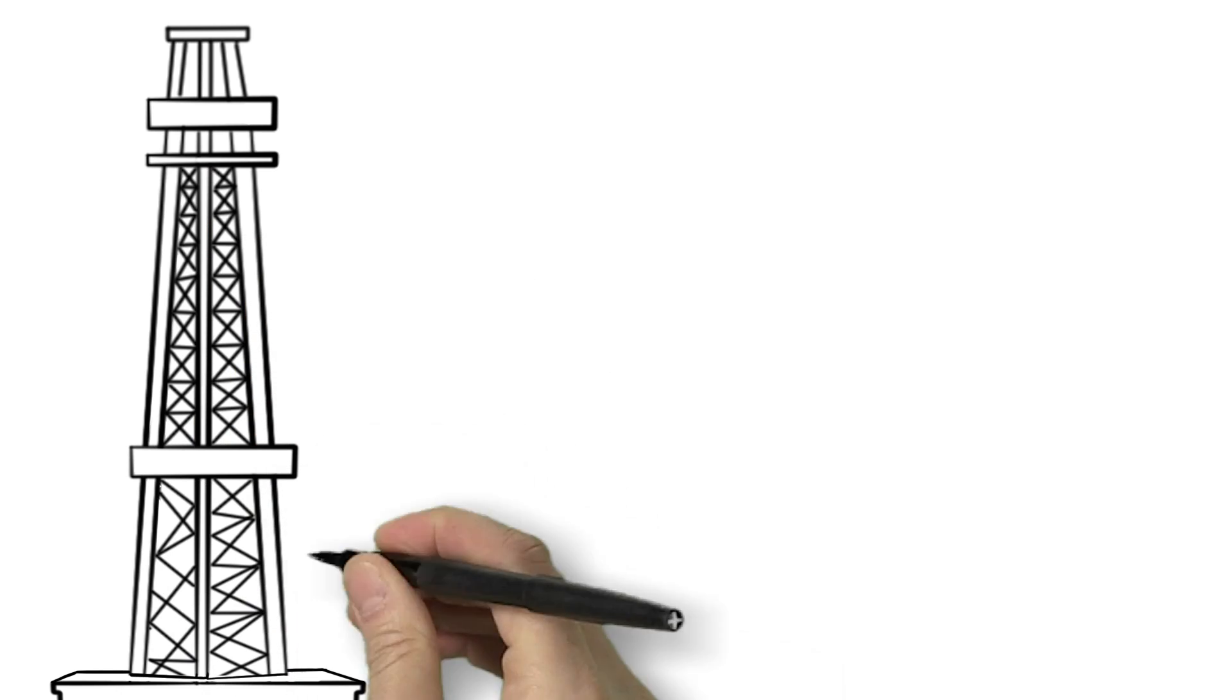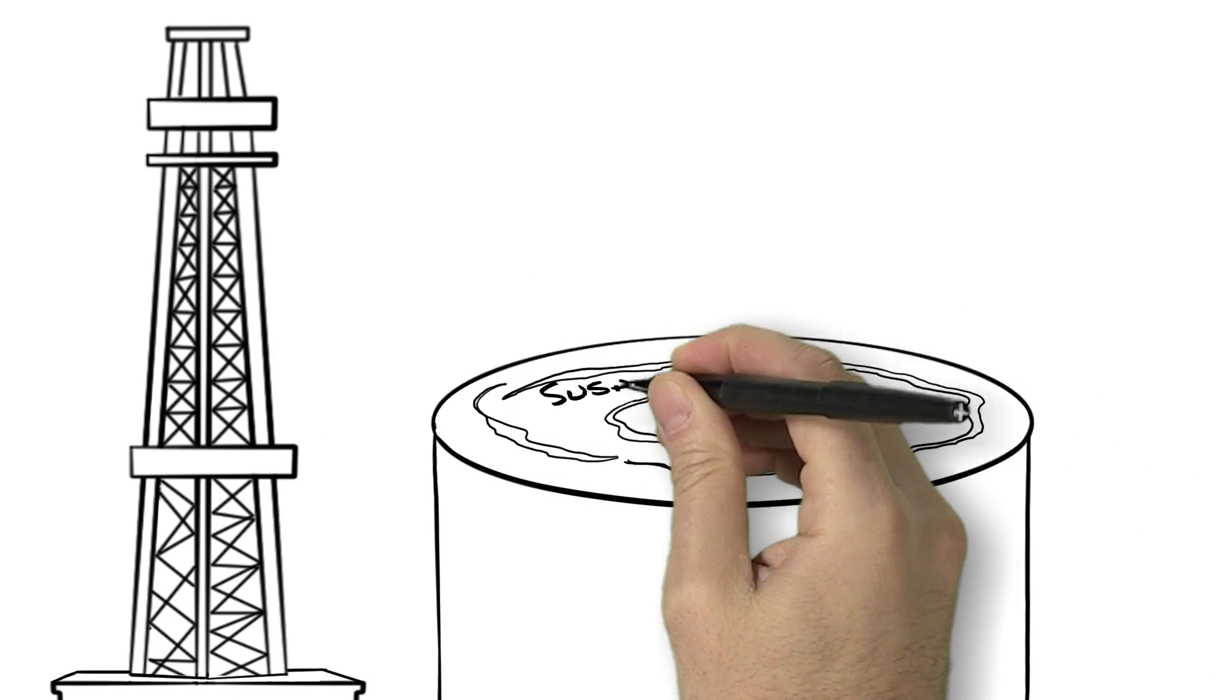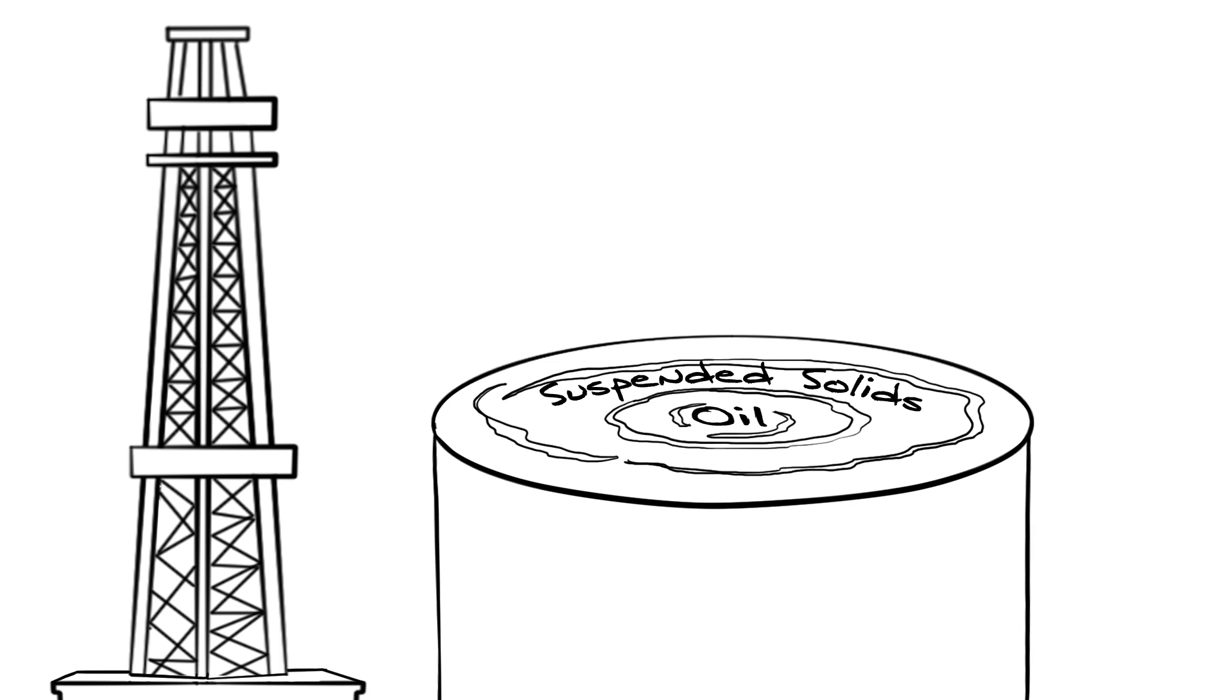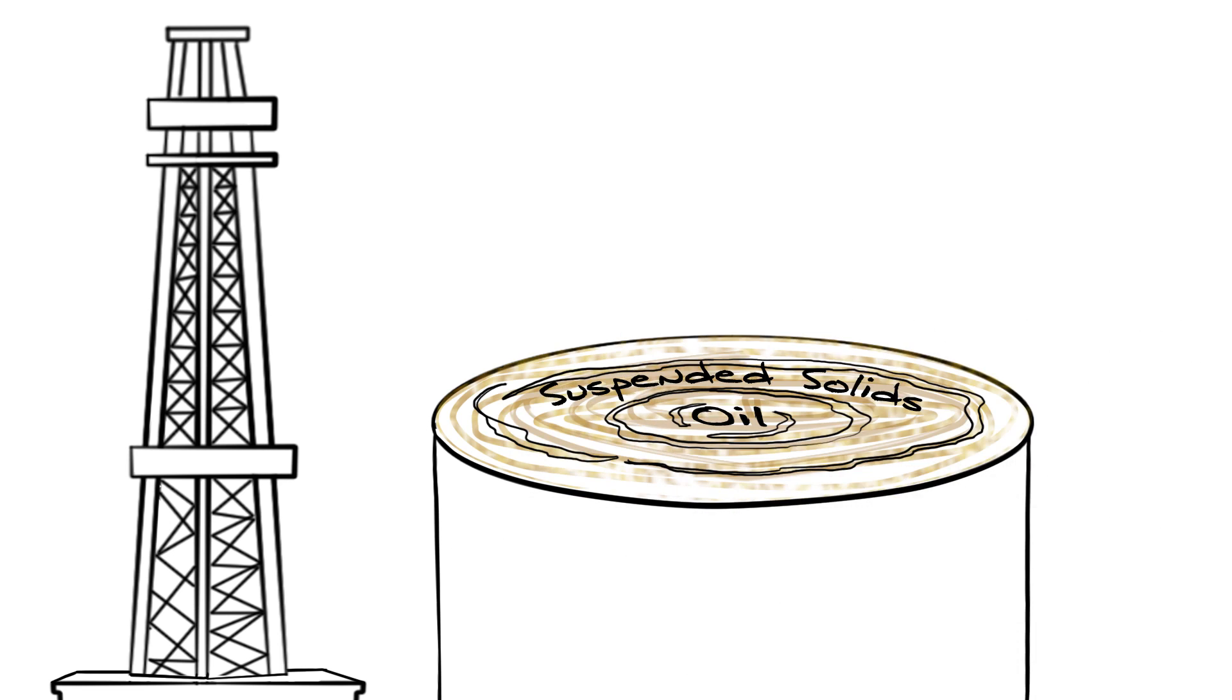You have oil, which is valuable and you'll want to recover every drop. The rest is suspended solids, which are visible particles, and finally dissolved solids, which are handled in the polishing stage.